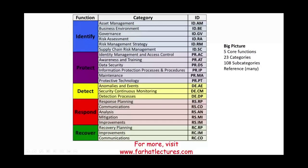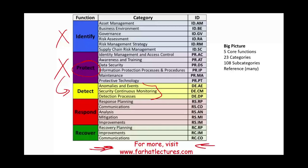We have now finished the identify function from the first session and completed the protect function today. The next function we will be working with is detect, which has three categories — basically half of the prior ones — so we should be able to go through it fairly quickly. Go to Farhat Lectures whether you are a CPA candidate, accounting student, or studying for the CMA or another certification. Invest in yourself, invest in your career. Stay motivated and stay safe.